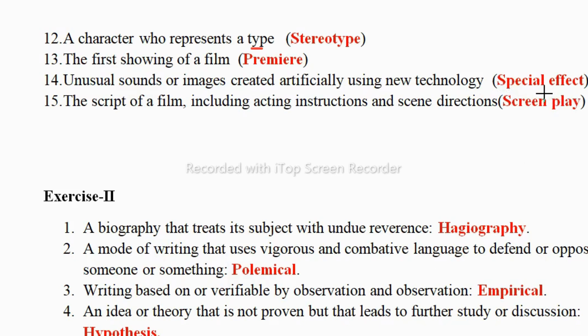Next: unusual sounds or images created artificially using new technology — it's called special effect. Special effects are like in movies such as Doraemon and Barbie, or monster movies, where artificial or cartoon non-living things look real. Technology is used to make them look real — that's called special effect.